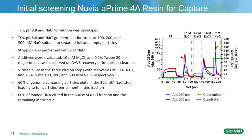Here is the data evaluating Nuvia A'4A as a capture step. On the right is a representative chromatogram. As with the HPQ, Tris pH 8.8 and salt were used as the conditions. The gradient steps were 100, 200, 500 mM to see where suitable separation between the empty and full capsids might occur. Stripping was again performed in 2 M salt. The virus did elute in three different areas — the 100, 200, and 500 mM — giving recoveries of 3%, 30%, 40%, and 25% respectively. 60% of the genome-containing particles were eluted in the 200 mM step, leading to a full particle enrichment in this fraction. Of the DNA that was loaded, approximately 60% was eluted in the 500 mM fraction and the remaining was in the strip.